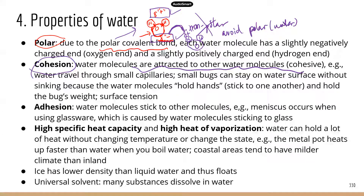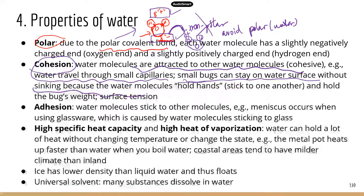This is why water can travel through small capillaries without energy — water molecules pull each other up through that small space. Small bugs can stay on a water surface without sinking. On the water surface, the water molecules are sticky with one another because the positive end is attracted to the negative end, forming hydrogen bonds — a weak force that holds the water molecules together.